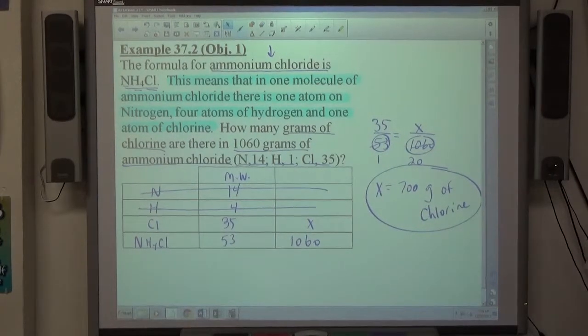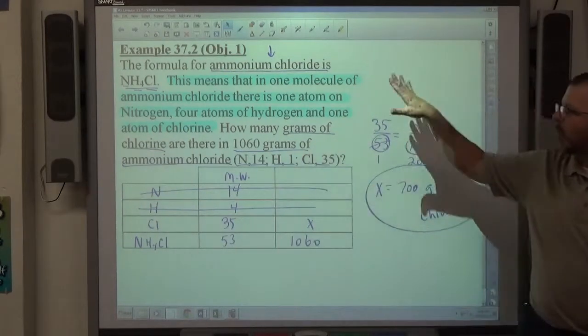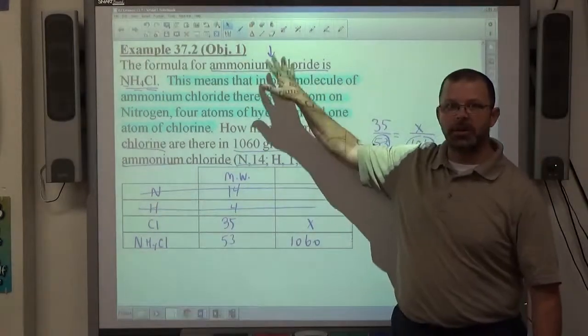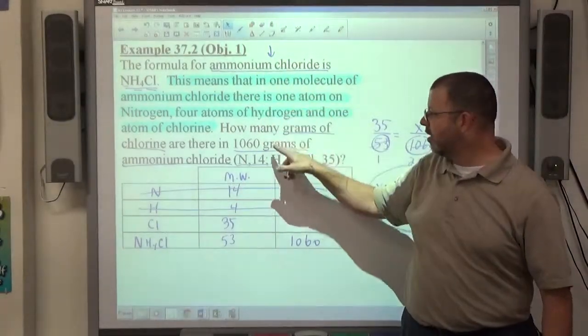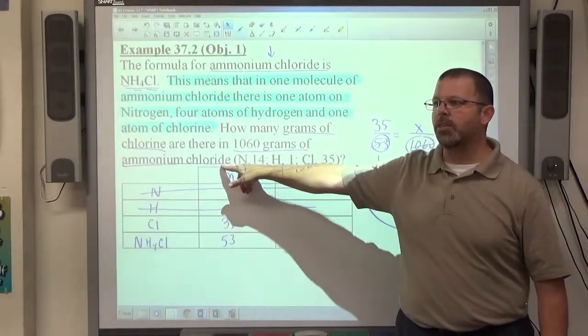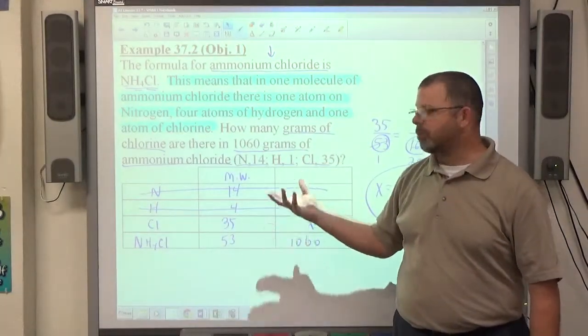So just get comfortable with filling the chart correctly. And again, read the first sentence thoroughly to make sure you know what the chemical name is, the formula for whatever this is. They usually give you the weight of the overall thing. But if it says, if the nitrogen weighs this much, how much would the chlorine weigh, then you put nitrogen and chlorine.